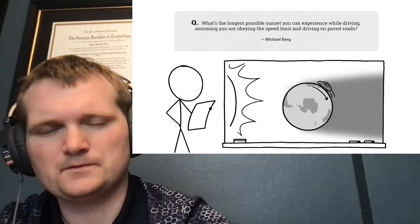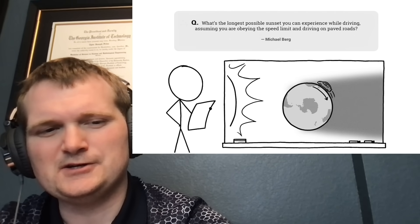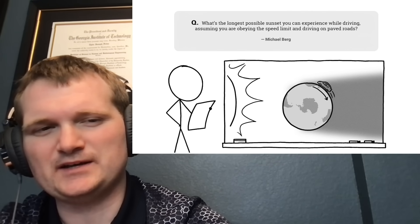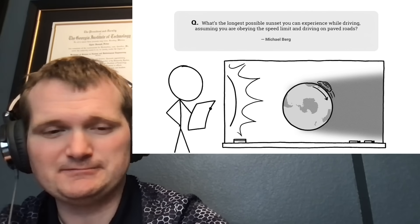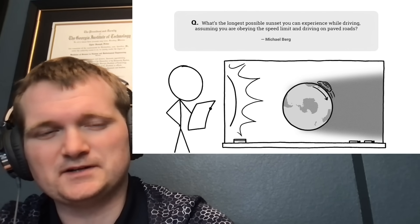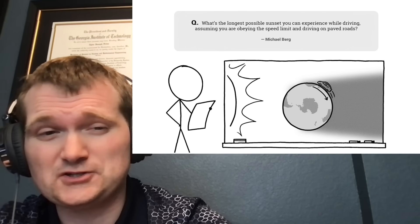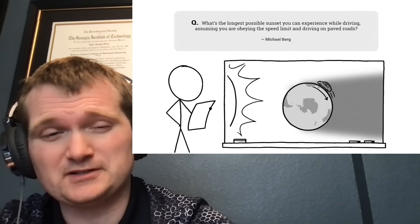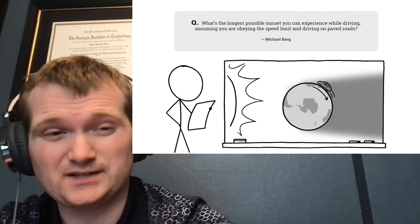Who asks, what's the longest possible sunset you can experience while driving, assuming you're obeying the speed limit and driving on paved roads? Giving us some restrictions here. That's gonna quite severely hamper us. But in nuclear engineering, we're used to having constraints. Speed limits are analogous to core thermal limits. You don't have any friends if you exceed those, both for reactor power output and for reactor heat distributions.